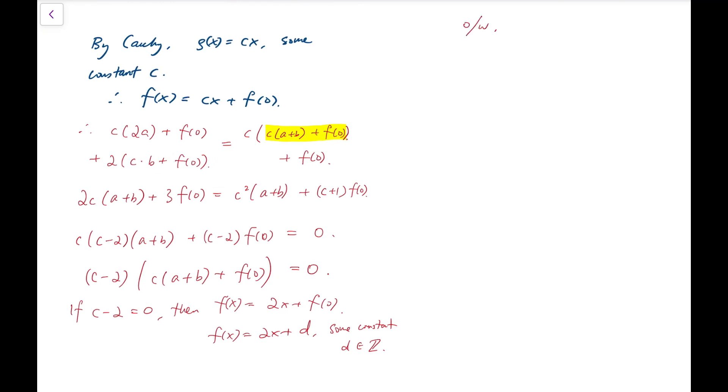In the second case, otherwise, c times a plus b plus f of 0 has to be 0. For this case, because a and b are arbitrary, and this must be identically equal to 0 for any a and b, all I can say is that c must be 0, and at the same time, f of 0 is also 0. So in this case, f of x is constantly equal to 0. It's always 0 all the time, it's the 0 function.